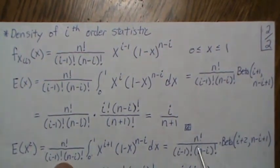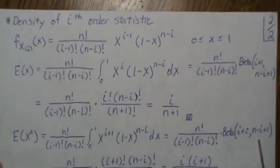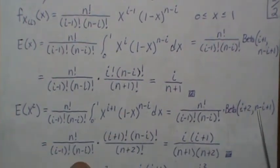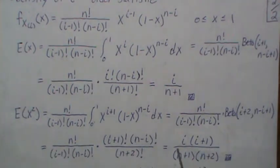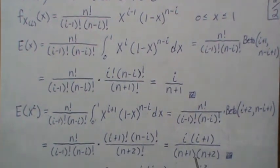Well this is a beta distribution. So that's this. And then this can be written in factorial form, which is this. And that simplifies to this. So that's the second moment.